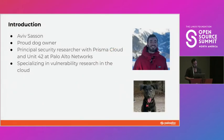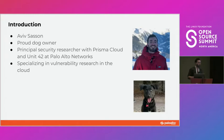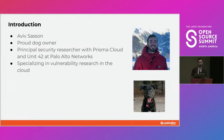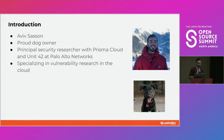My name is Aviv Sasson. I'm a principal security researcher with Prisma Cloud and Unit 42 at Palo Alto Networks. My job is to support the security efforts for the product, and I'm also part of an initiative to contribute to the security of the cloud ecosystem by looking for vulnerabilities and zero days, reporting them, and making sure they are patched — and this way, customers are happy and secure.